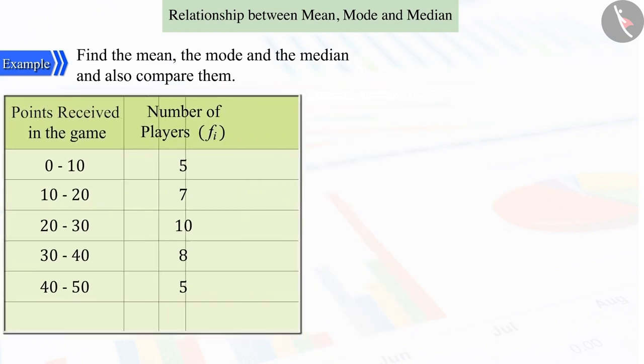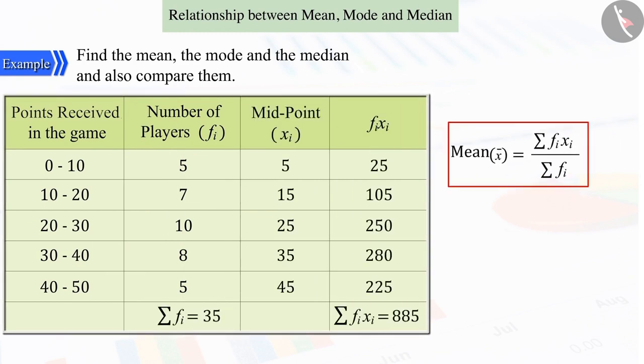To get the mean from the above data, substituting the sum of observations and the number of observations in the formula for the mean, on solving the mean is obtained as 25.28.